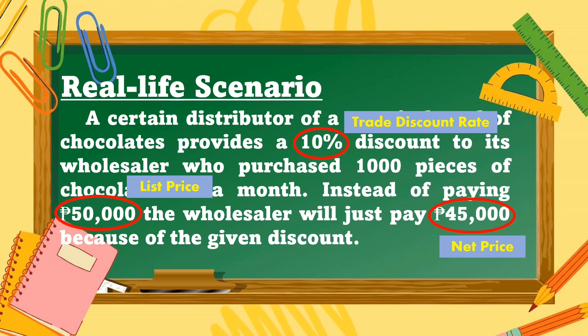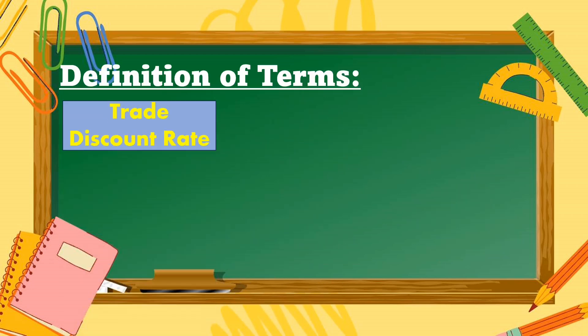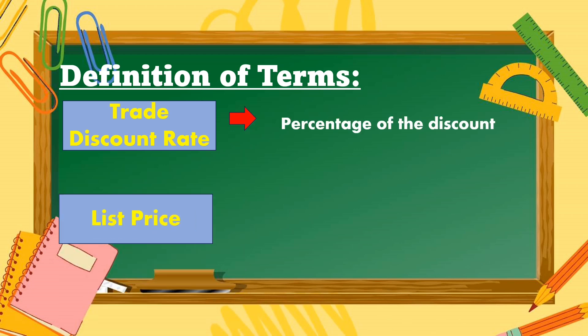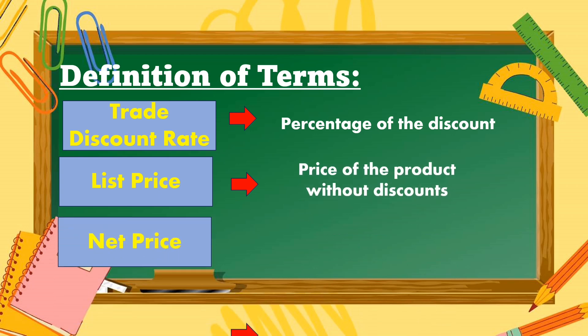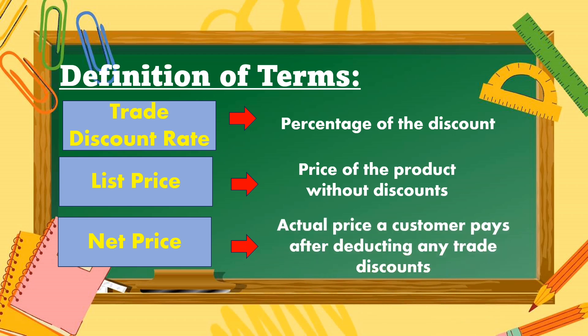Now let us define those terms. Trade discount rate is the percentage of the discount. List price is the price of the product without discounts. And the net price is the actual price a customer pays after deducting any trade discounts.